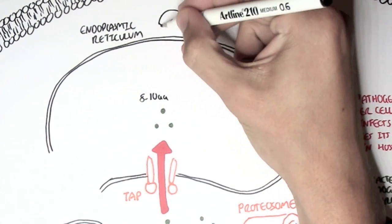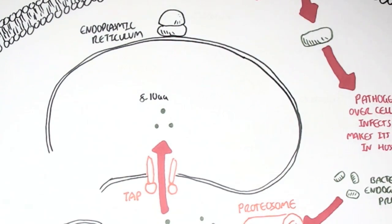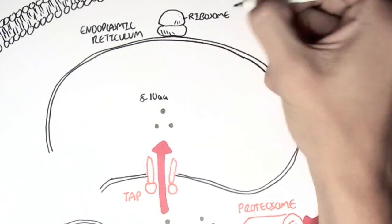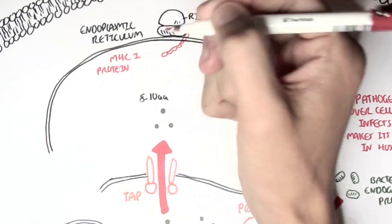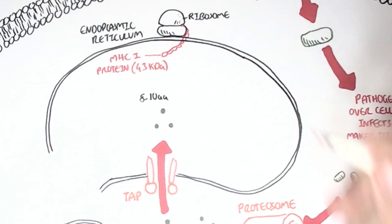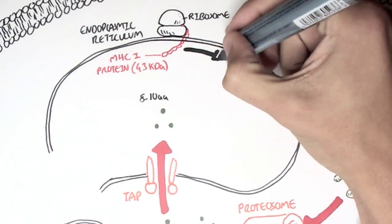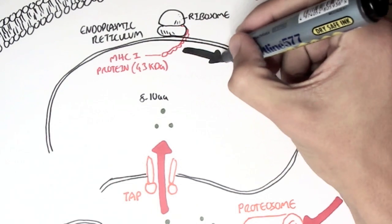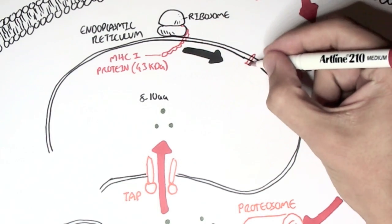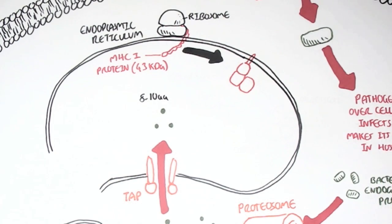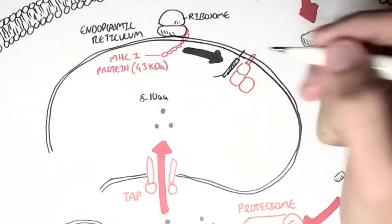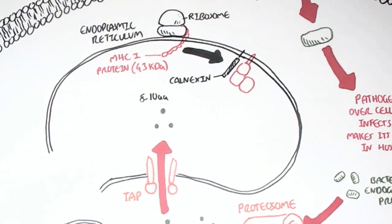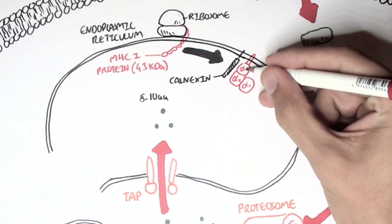they can get further broken down to about 8 to 10 amino acids by specific enzymes within the endoplasmic reticulum. So let's stop there and look at the ribosome. Ribosomes are machines that make proteins. And so this ribosome is making proteins, an MHC class 1 protein, which is about 43 kilodaltons in mass. So here it will make the MHC class 1 protein. However, it is incomplete, because it is only composed of alpha 1, 2, and 3 domains, as you can see.